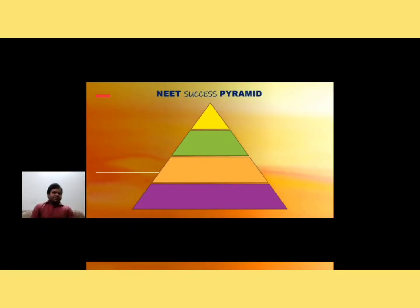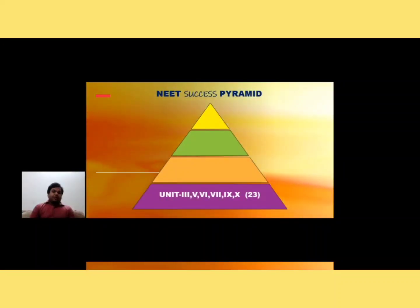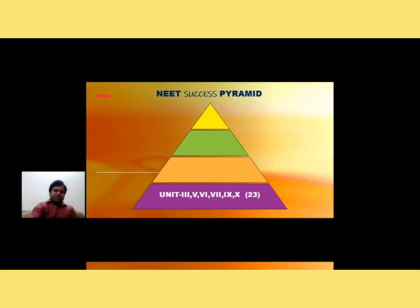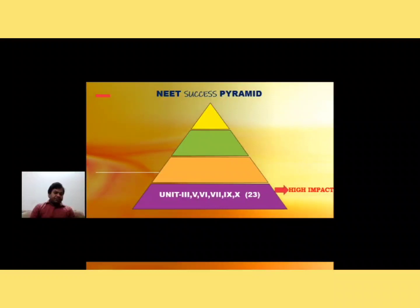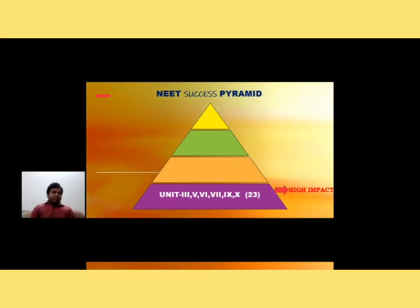I have made a success pyramid for NEET. For any success, the base has to be strong — just like a pyramid. For NEET 2020, biology is the backbone. The main high impact topics are Units 3, 5, 6, 7, 9, and 10 — a total of 23 topics. High impact means that compared to the volume, the number of MCQs asked in previous years is very high. These topics must be thoroughly covered because challenging questions target this segment.